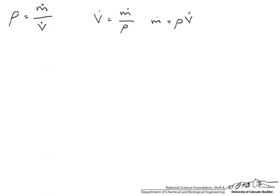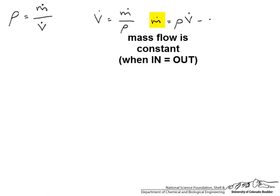And the important thing to remember is the density can change from inlet to outlet. The volumetric flow rate can change from inlet to outlet, but this is constant when our mass balance is m in equals m out.